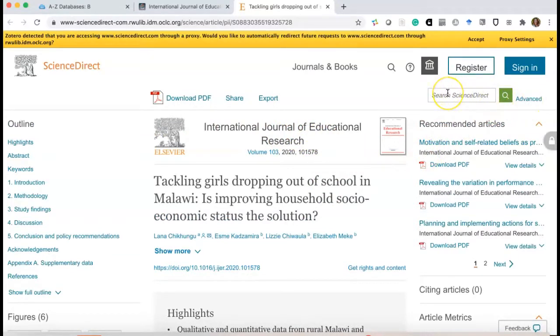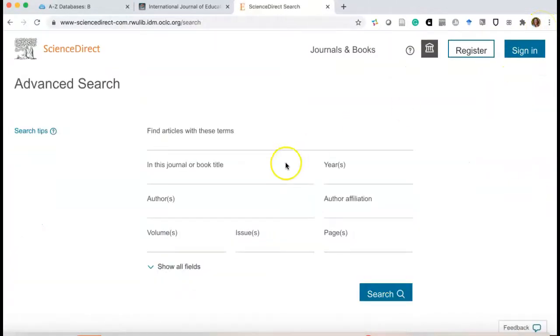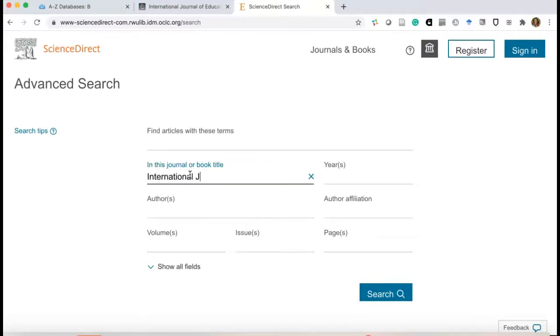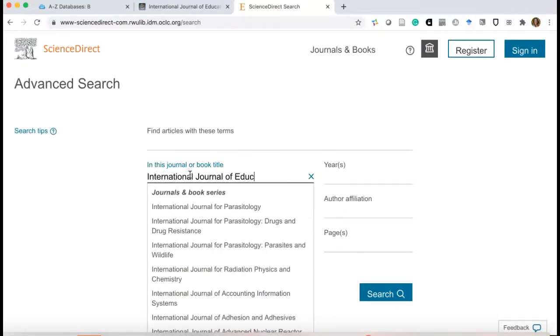If I click on any article, it will take me right out to the page where this journal lives. And I can actually keyword search within the journal itself. I can't keyword search in Browzine, but I can keyword search in the journal. So if I click on that advanced search, it's asking me to type in the name of the journal I want to search in. So we were looking at the International Journal of Educational Research.